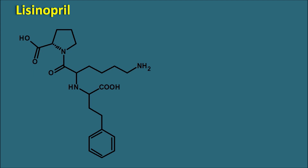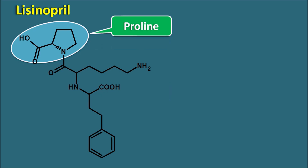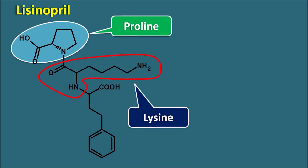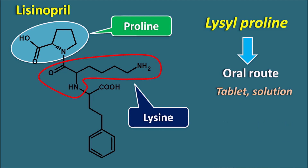As the suffix -pril indicates, lisinopril is an ACE inhibitor. Looking at its structure, one of the amino acids present is proline, and another amino acid is lysine. So lisinopril is a dipeptide made up of lysine and proline — it is a lysyl-proline derivative. This drug is given by the oral route as a tablet as well as a solution, with a dose ranging from 2.5 mg to 40 mg. Since lisinopril is a small and somewhat modified peptide, it can be given orally and shows good oral bioavailability.